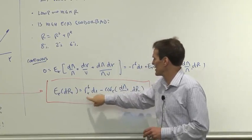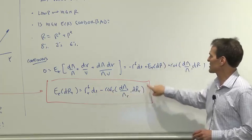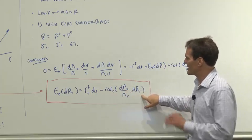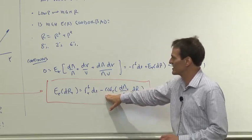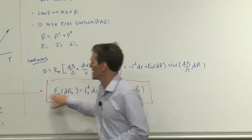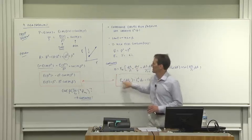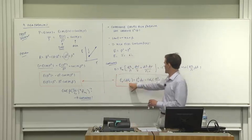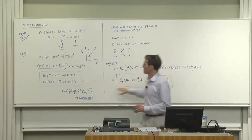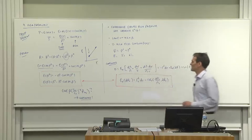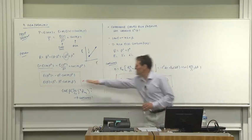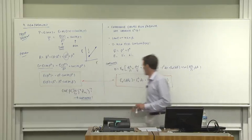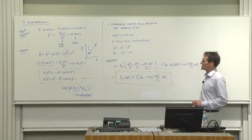Rearranging, expected return equals risk-free rate minus covariance of discount factor growth with return. This is now transparently in continuous time exactly the same form as in discrete time. Expected return equals risk-free rate plus covariance with the discount factor — a clear continuous time expression of the same discrete time idea. Fortunately we also lose the RF in front, which was a bit annoying in the discrete time case.